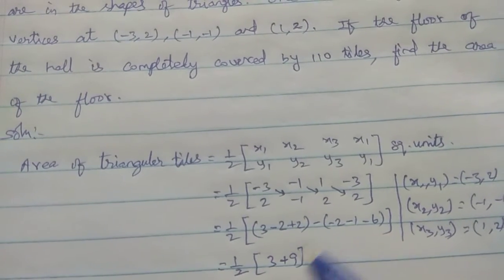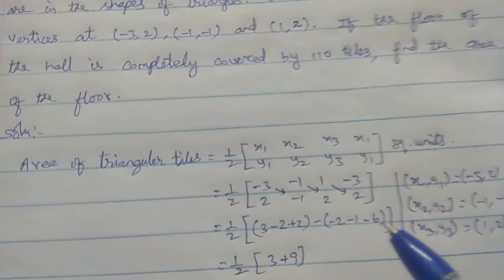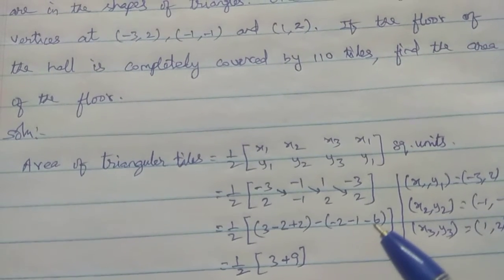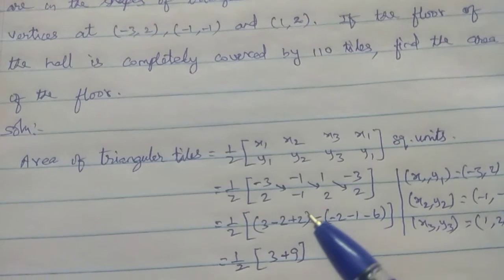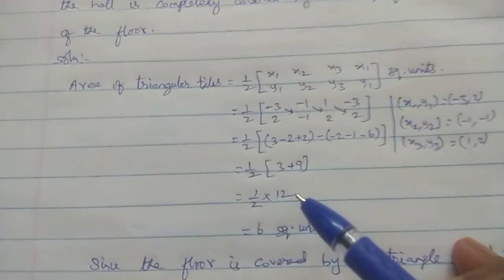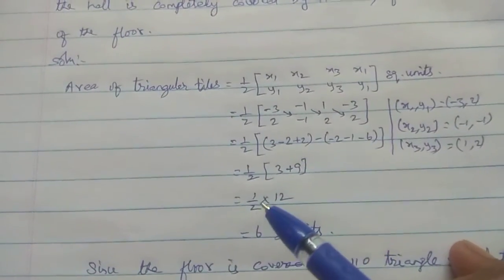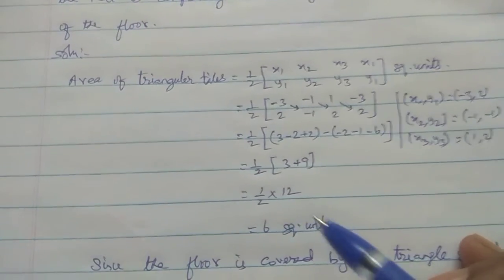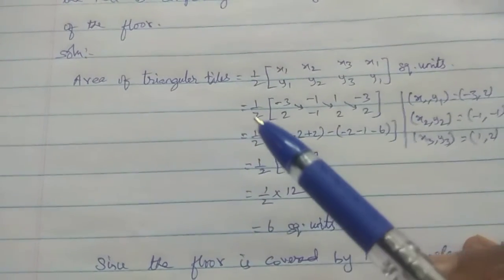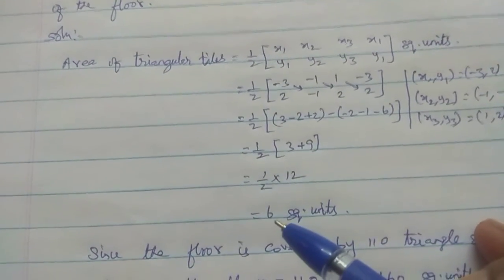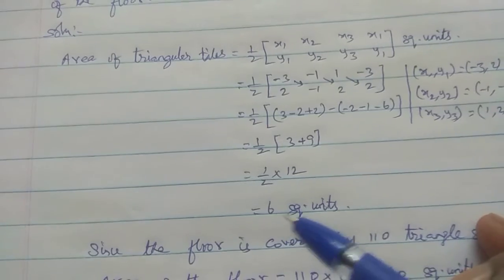Simplifying: plus 2 and minus 2 cancel. We get minus 6, minus 1, minus 2. Then minus of minus gives plus 9. So 9 plus 3 equals 12. Therefore, one-half of 12 equals 6 square units. So one triangular tile has an area of 6 square units.